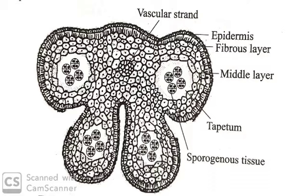Each lobe consists of an anther wall and inner sporogenous tissue or pollen grain. The sporogenous tissue is enclosed within the anther wall. The anther wall is formed of four layers.